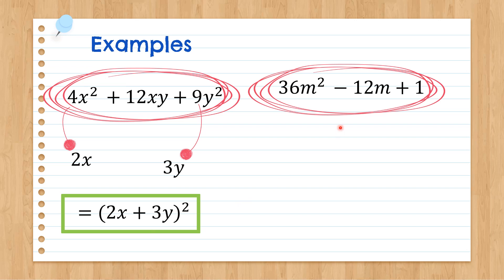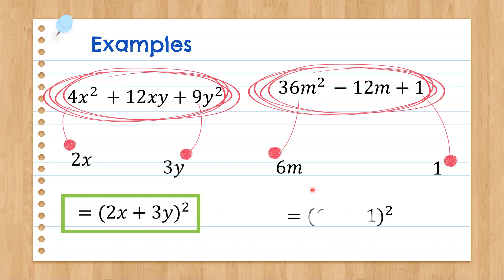Another example: 36m squared minus 12m plus 1. We have a perfect square for the first term and a perfect square for the last term. Get their square roots: that gives 6m and 1. Therefore, the squared binomial becomes (6m minus 1) squared, because the middle term sign is minus. That is when the factor takes the minus sign.